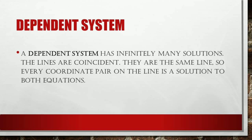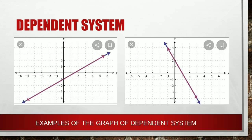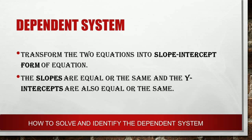And now the last type of system — we have the dependent system. A dependent system has infinitely many solutions. The lines are coincident; they are the same line, so every coordinate pair on the line is a solution to both equations. Here are examples of the graph of dependent systems. It looks like one line, but they are actually coincident. To identify the dependent system, we transform the two equations into slope-intercept form, and you will see that the slopes are equal and the y-intercepts are also equal.